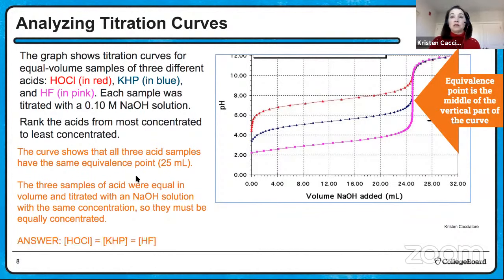Part A: calculate the pH of the solution in beaker three and justify your answer. The word 'justify' means you must show work or give explanation — you can't just write the answer. Beaker three is our strong acid, so calculating its pH just requires taking the negative log of the acid concentration. For a strong acid, the acid concentration equals the hydronium ion concentration. This is 10⁻² molar, so pH equals 2. If you wrote just '2' without any justification, you wouldn't earn the point.